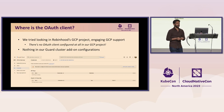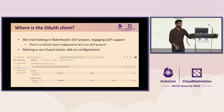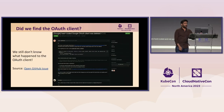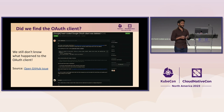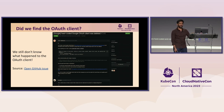What we ended up doing was patching Guard locally, creating our own OAuth client, building a binary from it, and shipping it to every engineer's laptop so they could start authenticating again. Our hunt to find what happened to the OAuth client has not stopped — we reached out to the Guard community, and it's been over a year since we filed the issue. It is still open, and we have no idea what happened.